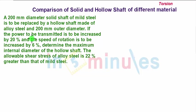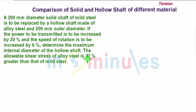The power to be transmitted is to be increased by 20% and the speed of rotation is to be increased by 6%. Determine the maximum internal diameter of the hollow shaft. The allowable shear stress of alloy steel (the hollow shaft) is 22% greater than that of mild steel.